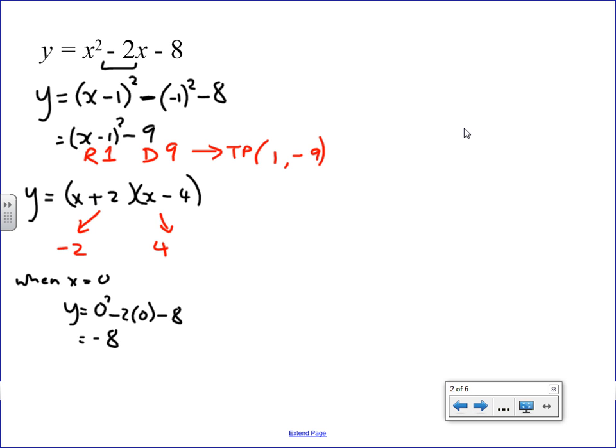So, I've got loads of information here. I've got the turning point, I've got the x-intercepts, I've got the y-intercept, I've got everything. I know it's a positive quadratic, so it's a U shape, so the sketch should be fairly straightforward now.